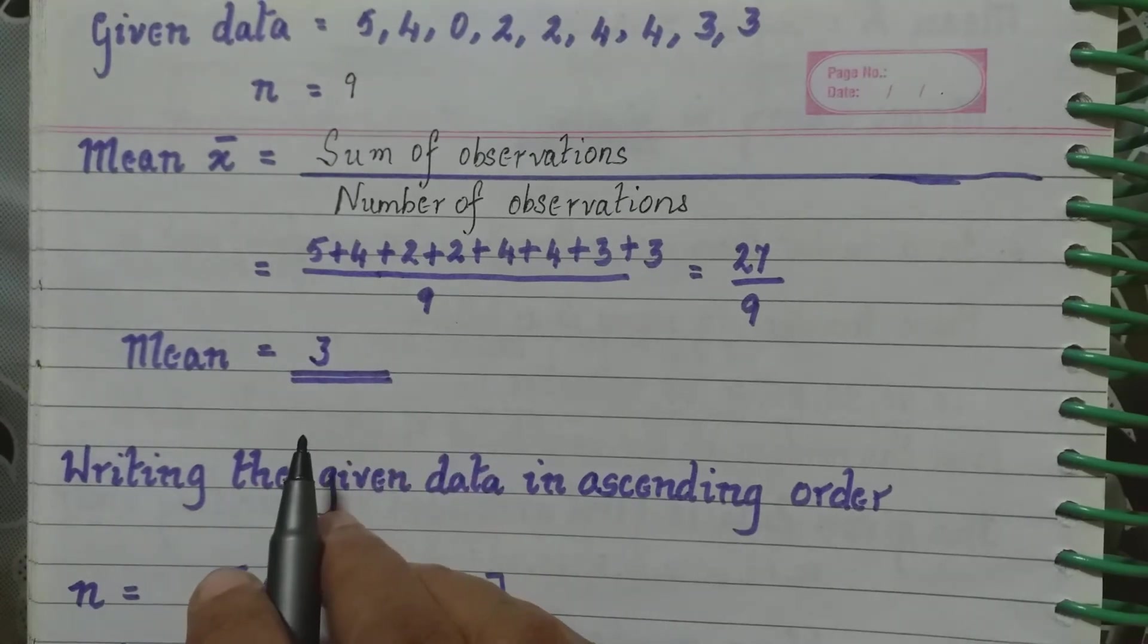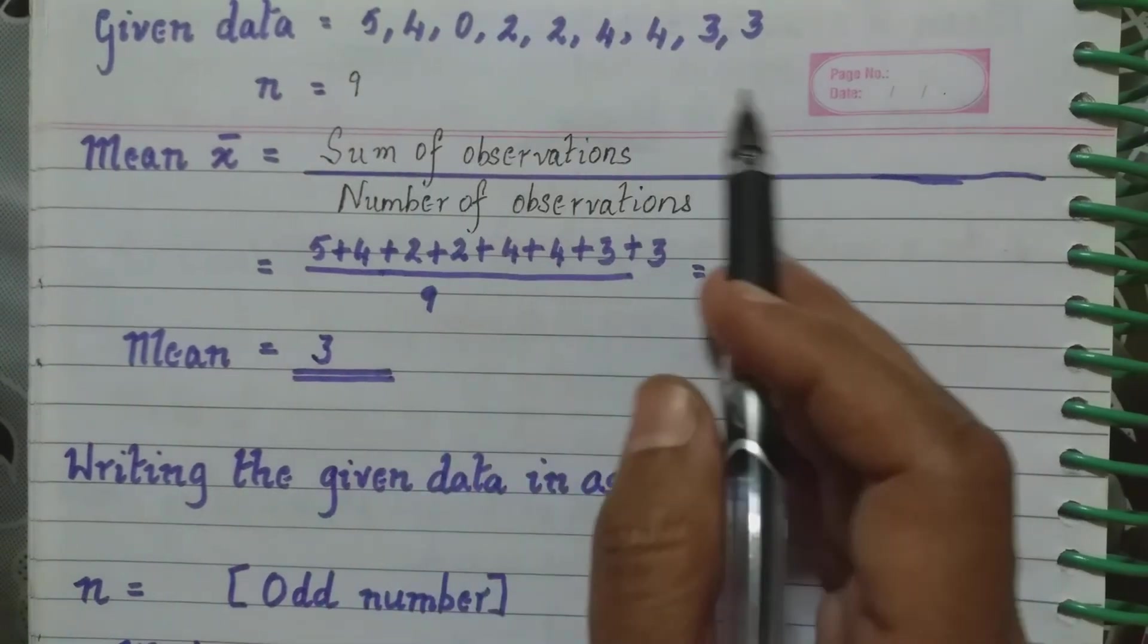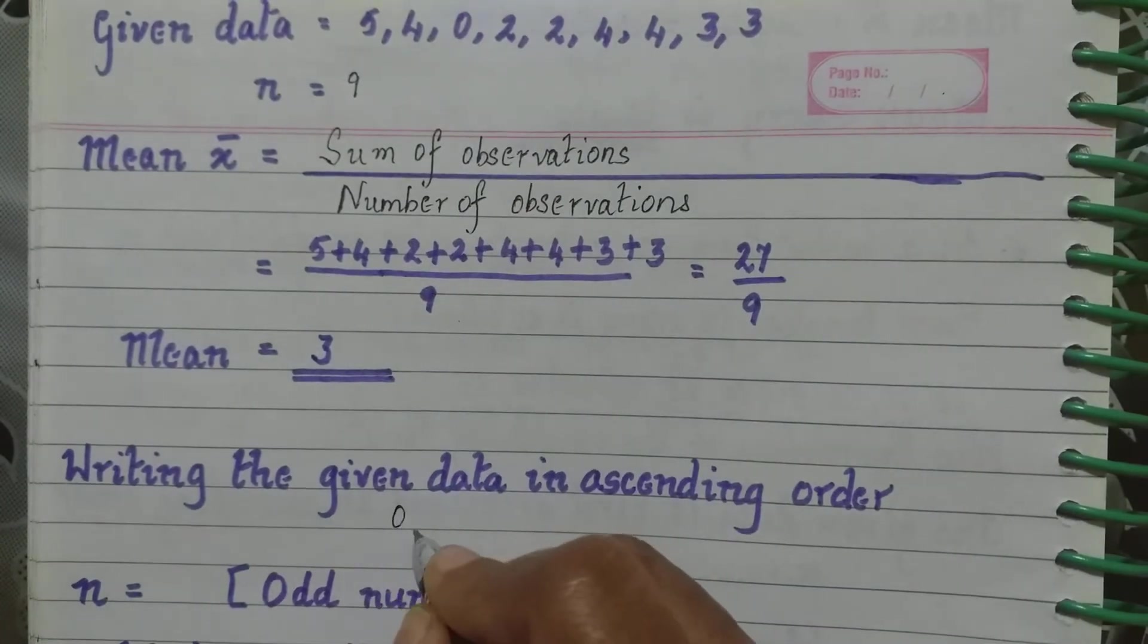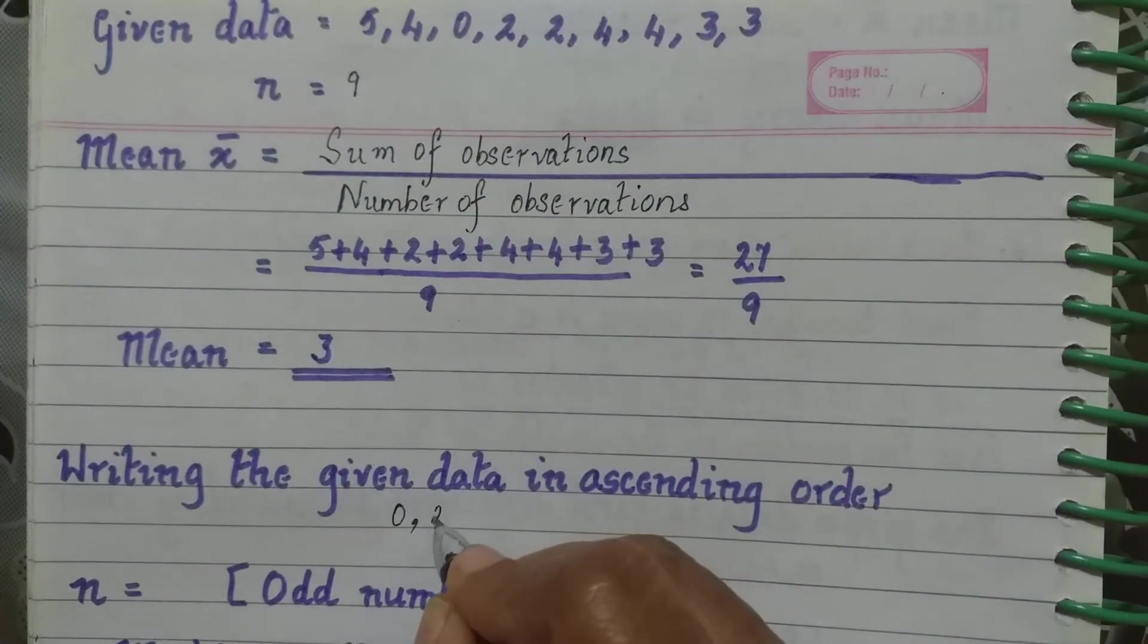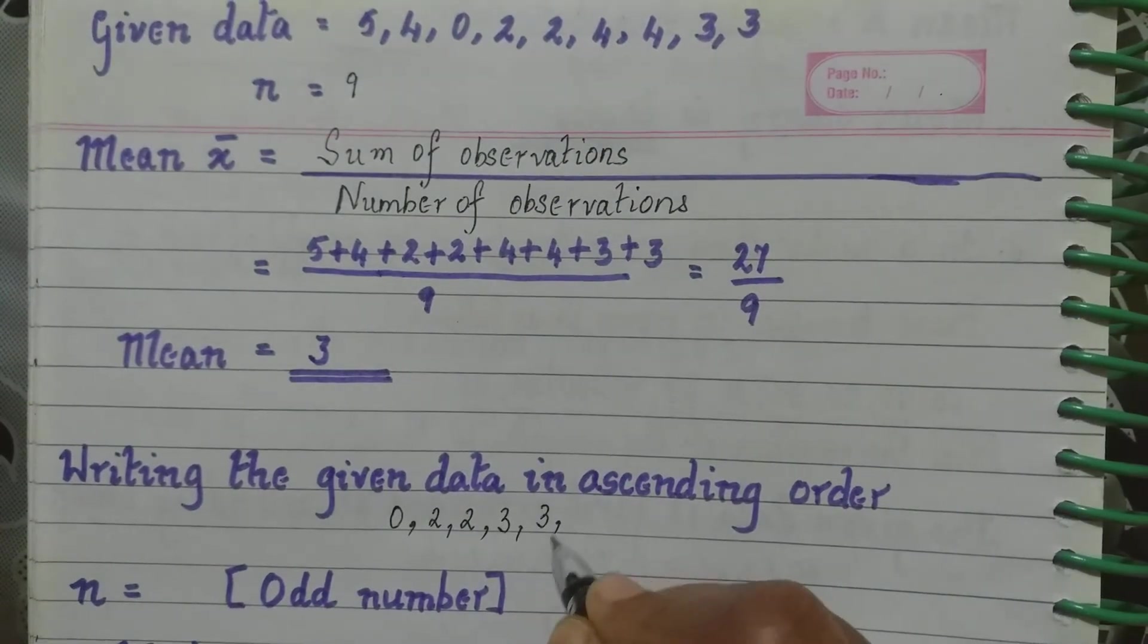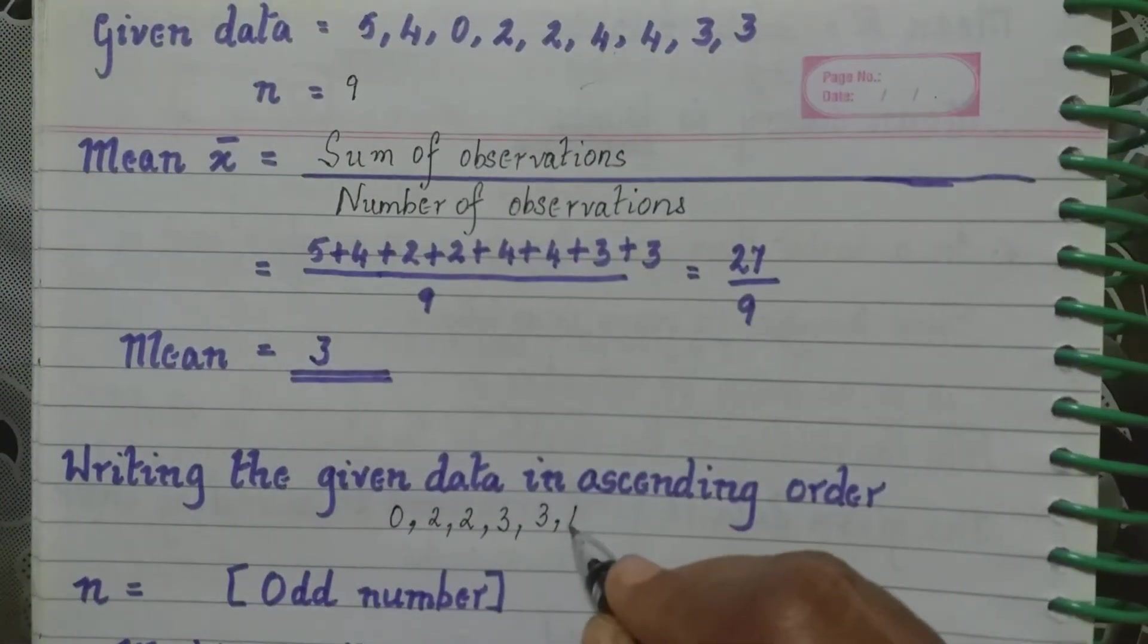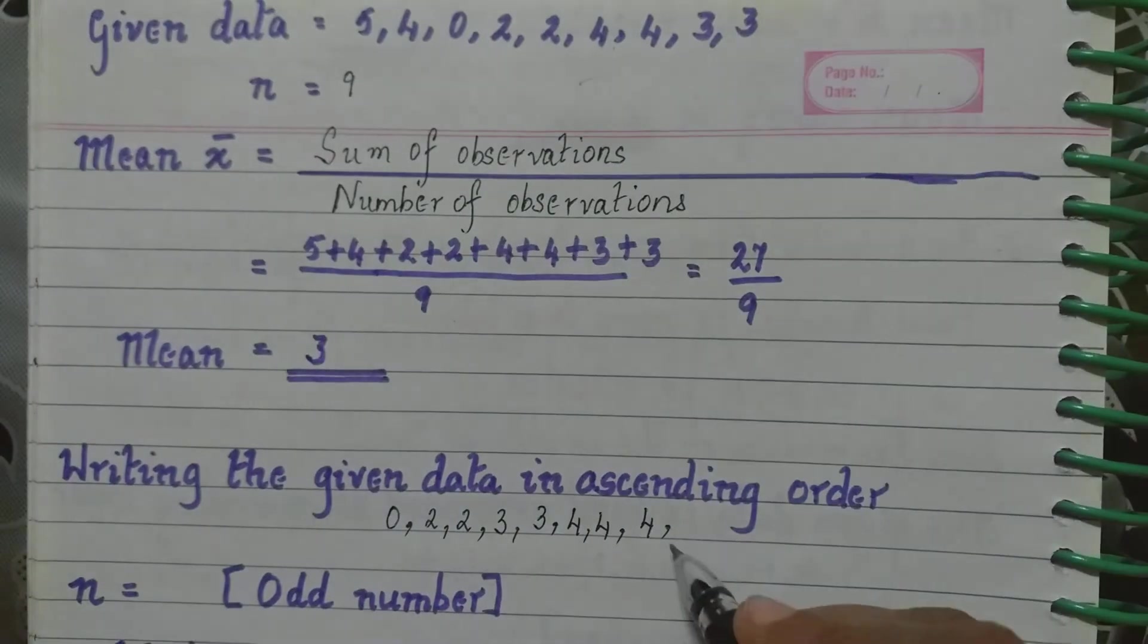Next we have to find the median. So we have to write the given data in the ascending order. It starts with the smallest number that is 0. Then we have 2 repeated twice. Then we have 3 repeated twice. Then we have 4 repeated three times. And then we have 5.